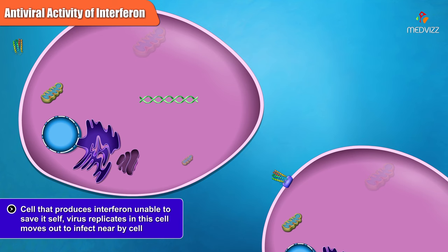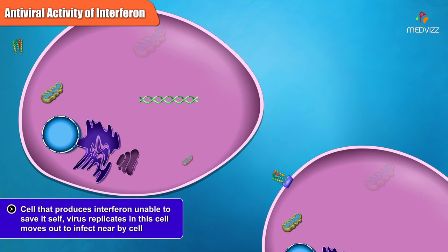The cell that produces the interferon is unable to save itself. The virus replicates in this cell and then moves out to infect nearby cells.